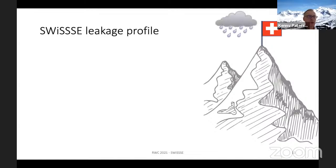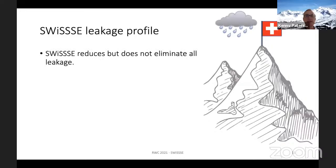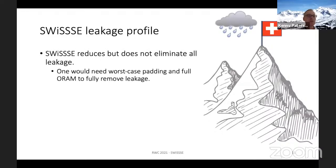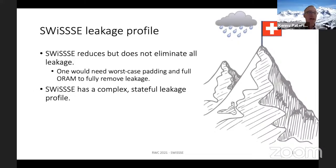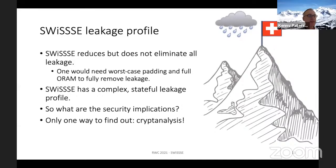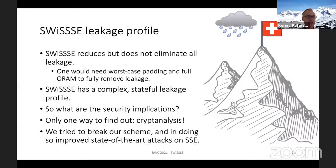There is still a leakage profile from SWISS, common to all practical SSE schemes — we reduce but don't completely eliminate leakage. Completely eliminating leakage would require worst-case padding and full ORAM, leading to significant overheads. SWISS has a complex and stateful leakage profile, and the only way to judge its security implications currently is cryptanalysis. We performed the best cryptanalysis we could, tried hard to break our scheme, and in doing so improved the state of the art of attacks on SSE. We plan to produce a separate paper describing those attacks.